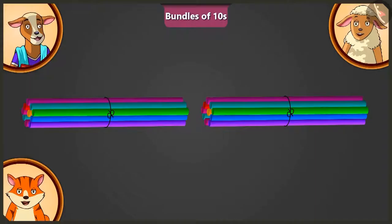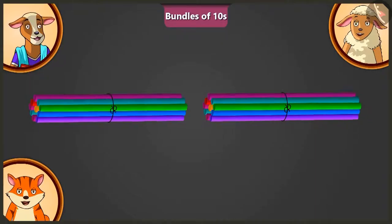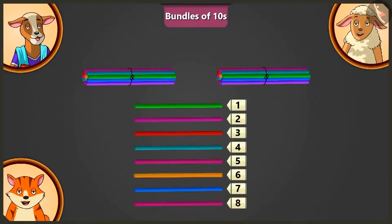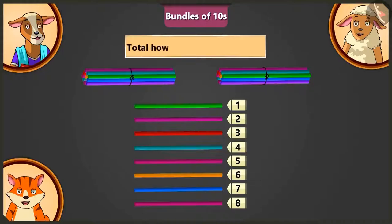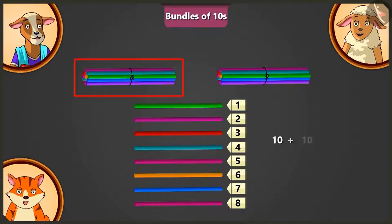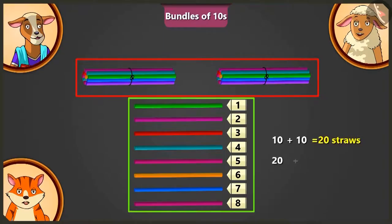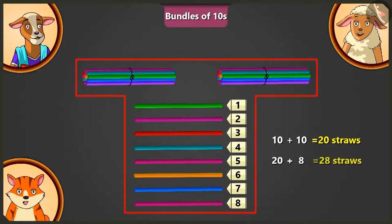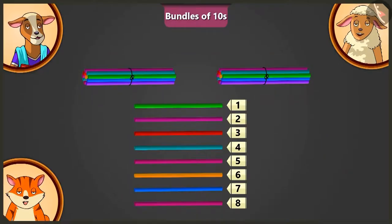Look, Billy, I am putting these eight straws next to both the bundles. Now tell me, how many straws are there in total? Adding ten straws to ten straws makes twenty straws, and adding eight to twenty straws, there are twenty-eight straws in total.